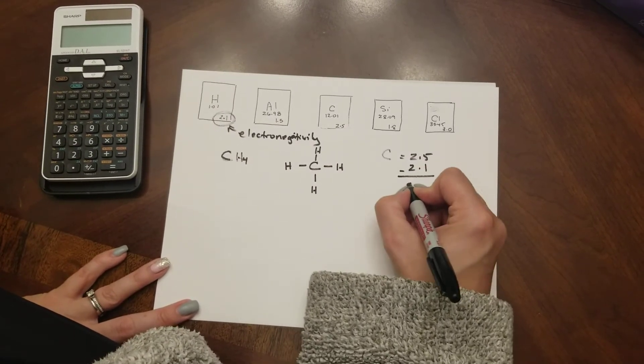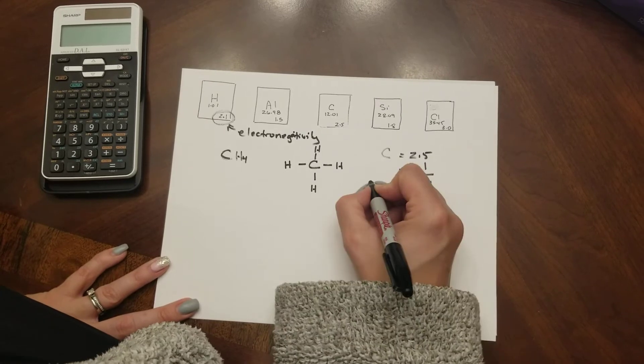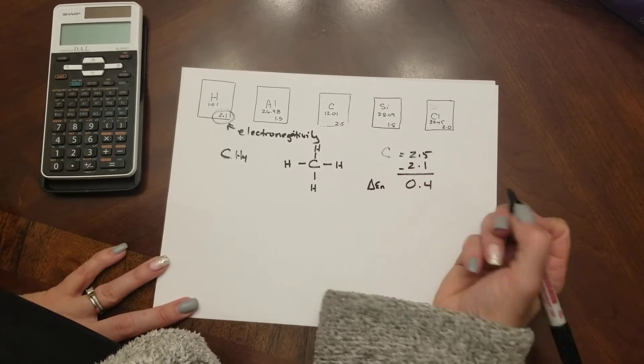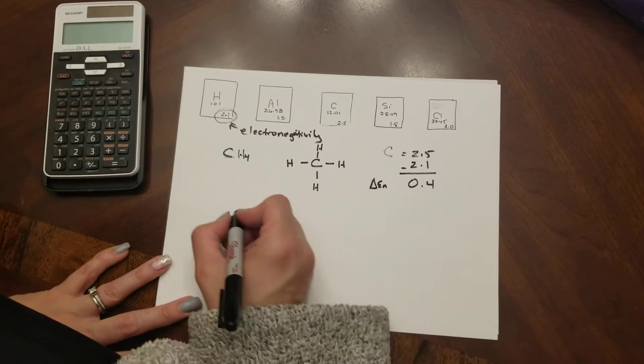When we subtract we get a difference. This difference in electronegativity tells us about the type of bond we have.